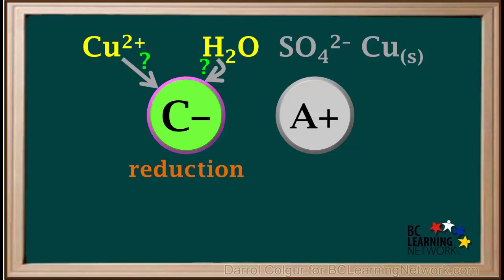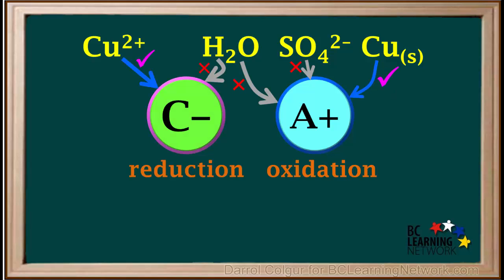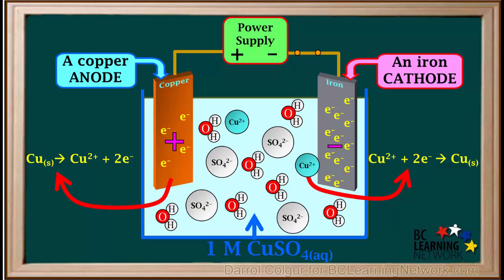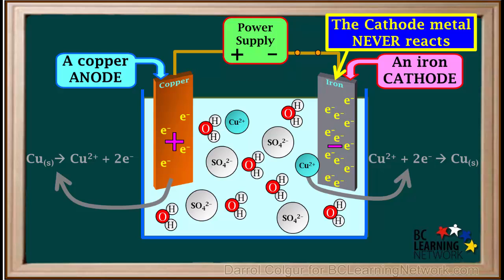To summarize, for this type 3 electrolytic cell, copper 2+ ions and water are the candidates for reduction at the cathode, and water, sulfate, and copper metal are candidates for oxidation at the anode. Using the left side of the reduction table, reduction of copper 2+ ions takes place at the cathode. Using the right side, oxidation of solid copper metal takes place at the anode. It's very important to remember that for a type 3 electrolytic cell, it doesn't matter what metal the cathode is made of — the cathode metal never reacts. So there are no half reactions involving iron in this case.